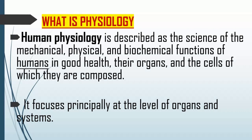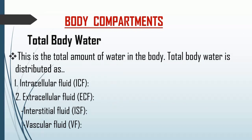In human physiology, we study how body tissues function. Most people ask what is the difference between human physiology and human anatomy. Human anatomy is concerned with the structure and function of tissues and organs, while human physiology is concerned with how body organs and tissues function in a good condition. Physiology focuses principally at the level of organs and systems, but to understand the physiology of organs and systems, we need to understand the physiology of the cell.